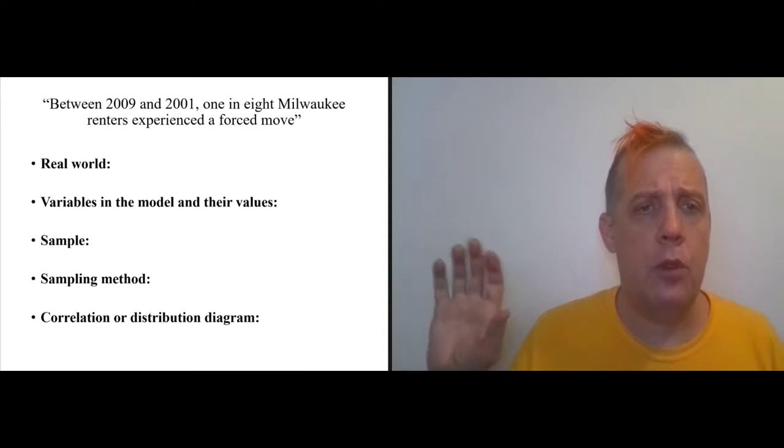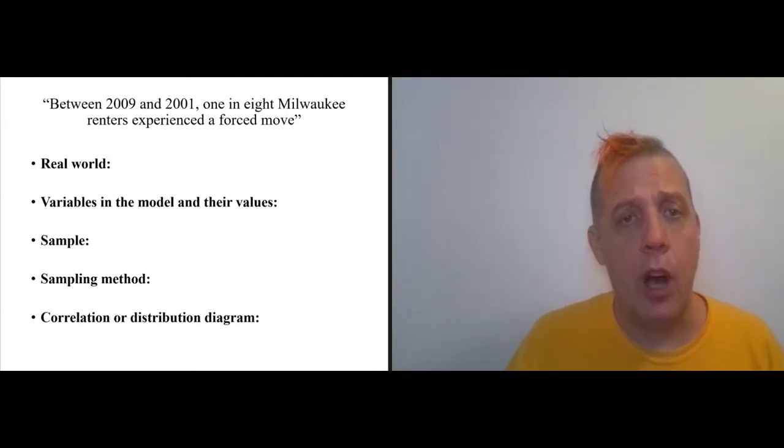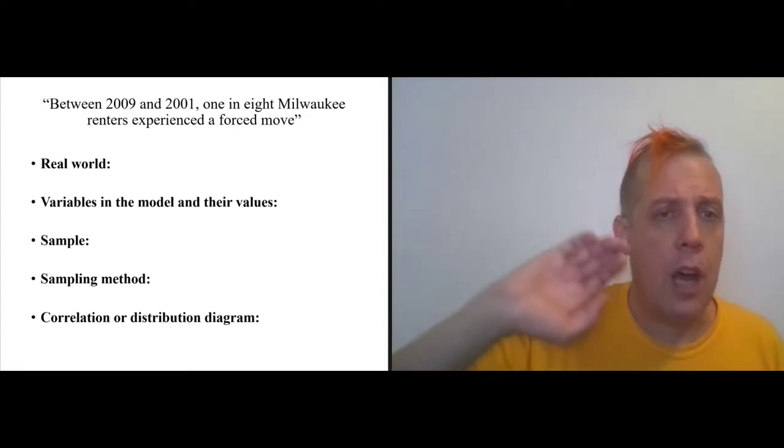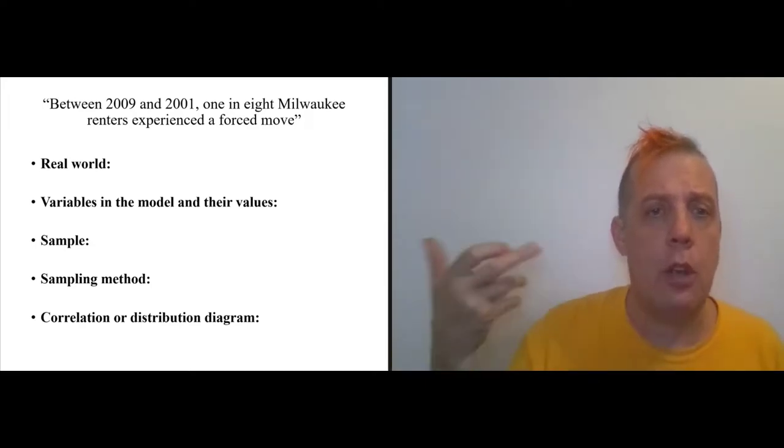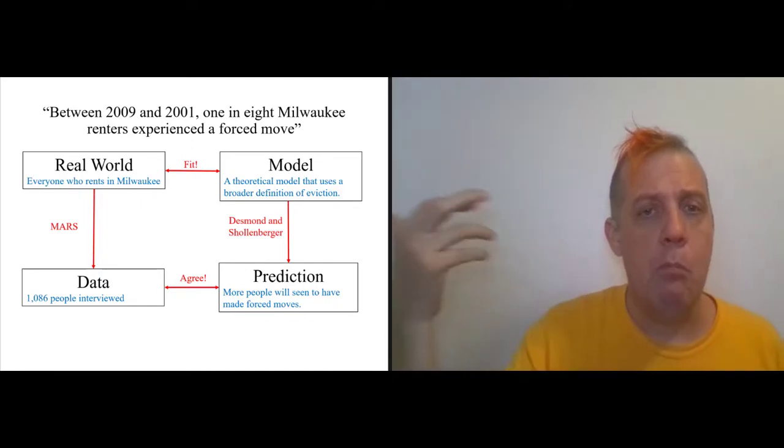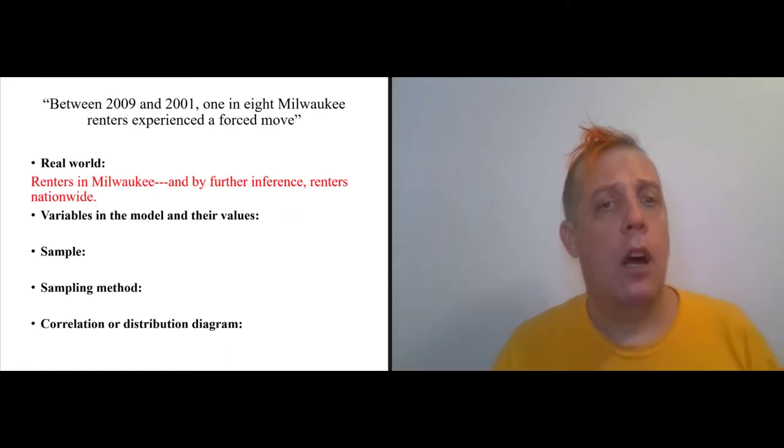So in module eight, I'm going to be asking you to analyze two claims from Desmond and Schullenberger, and one of them is the one that we've already been talking about: between 2009 and 2011, one in eight Milwaukee renters experienced a forced move. To understand this, I want you to list some elements that are part of Giere's model of a scientific event, including what is the real world and what is our representation of the real world. The real world is going to be renters in Milwaukee and sort of by further inference renters nationwide. That's the real thing. Reality exists.